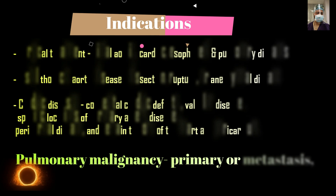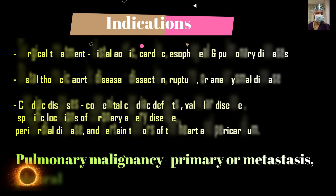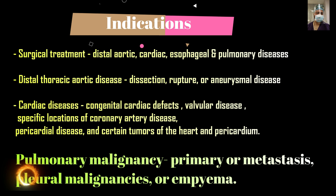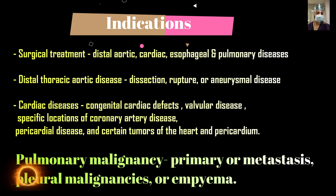The indications for thoracotomy include surgical treatment of distal aortic, cardiac, esophageal, and pulmonary diseases. Distal thoracic aortic disease can be dissection, rupture, or aneurysmal disease. Cardiac indications include congenital defects, valvular diseases, specific coronary artery disease, pericardial diseases, and certain tumors of the heart and pericardium. Pulmonary malignancy, pleural malignancy, and empyema are other indications.